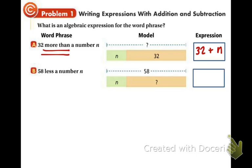In part B, we have the phrase, 58 less a number N. Take a look at the model. We have 58 total and we're taking away N. Well, what operation is the one that takes away? You may have guessed it, it's subtraction. So we're going to have 58 minus N.